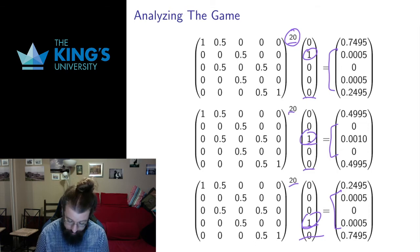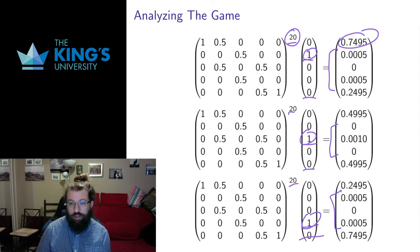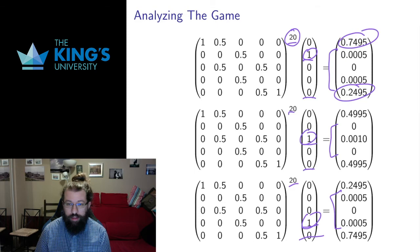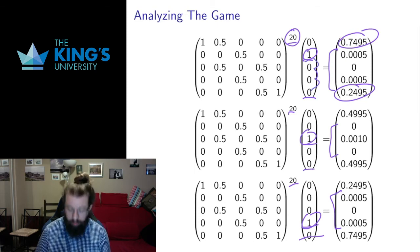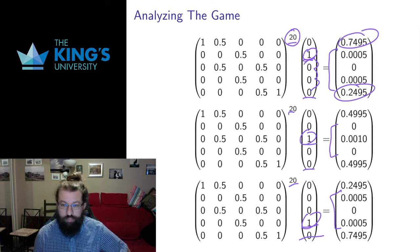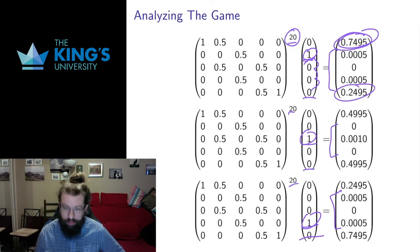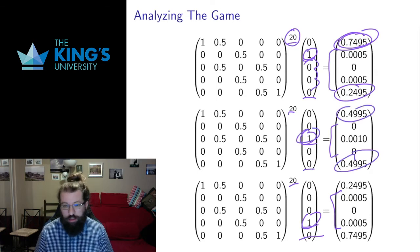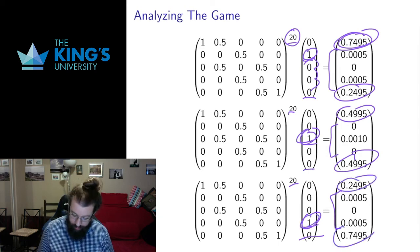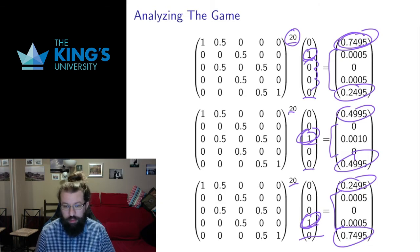If I start with one stake, I have roughly a 75% chance of losing and roughly a 25% chance of winning. That makes sense — I only start with one out of four, so it's relatively unlikely I'll make it all the way up to win. If I start in the middle with two stakes, it's roughly 50% to win or lose — it's a perfectly fair game, so that makes sense. If I start with three stakes, I'm only 25% to lose and 75% to win. That also makes sense.